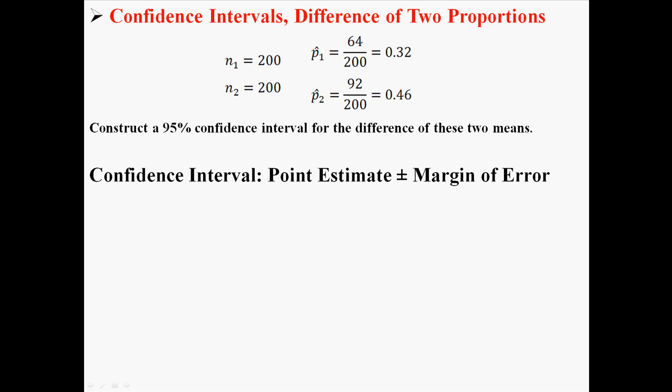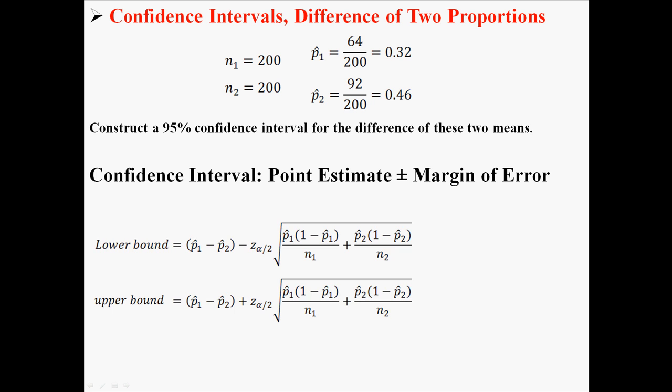Remember that a confidence interval is a point estimate plus or minus a margin of error. You're going to get two values, a lower bound and an upper bound. These are the equations for lower bound and upper bound. It includes the two sample sizes and the two proportions.